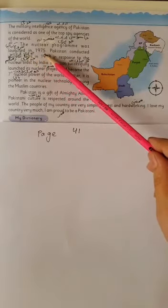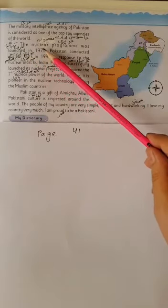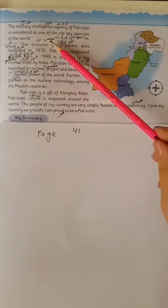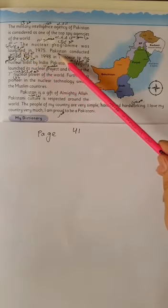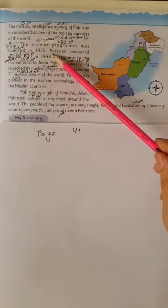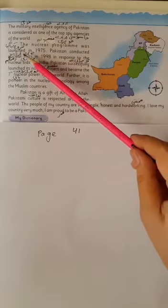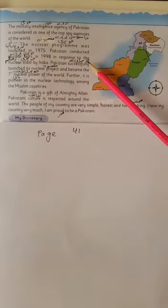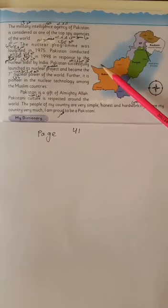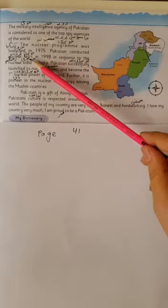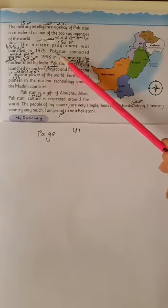The nuclear program was launched in 1975. Nuclear program: johri mansoobah. Launched: shuru kiya gaya. Johri mansoobah 1975 mein shuru kiya gaya. Students, johri ka matlab kisi bhi mulk ka apni hifazat ke liye khaas hathiyar banane ki mansoobah bandi karna hai.